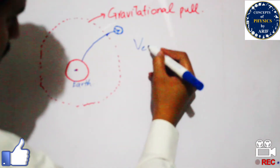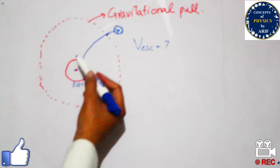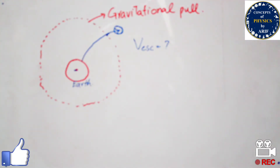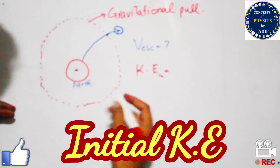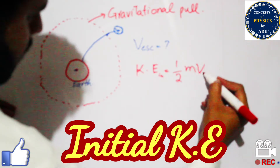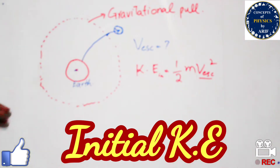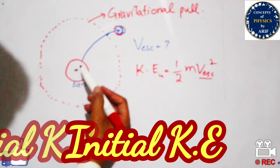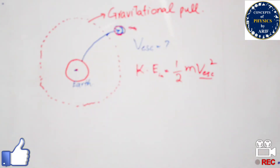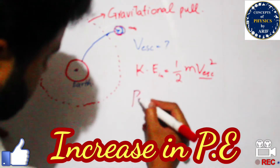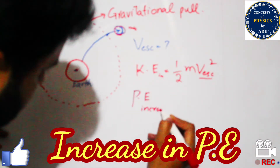We need to find the escape velocity of a body when it escapes from earth's gravitational pull. When a body moves with the escape velocity, the initial kinetic energy is half mv². As the body moves toward an infinite point away from the earth, the potential energy increases.